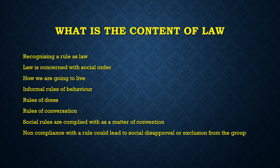The starting point is that law is essentially concerned with the problem of social order. In order that we can live together in a society, we need to have rules to govern how we are going to live. They can be of many different types — informal social rules, rules of behaviour, rules of dress, rules of conversation. These social rules are complied with as a matter of convention. If you don't follow the rule, you may be subjected to social disapproval or excluded from the group.